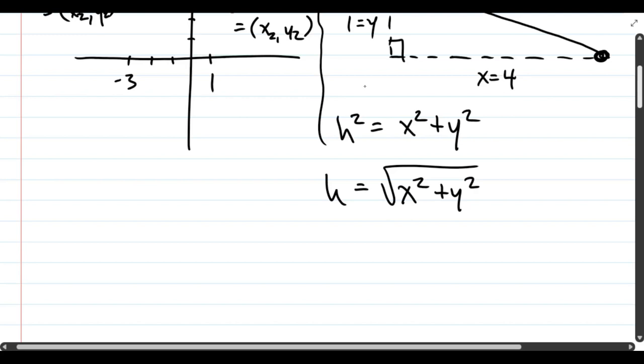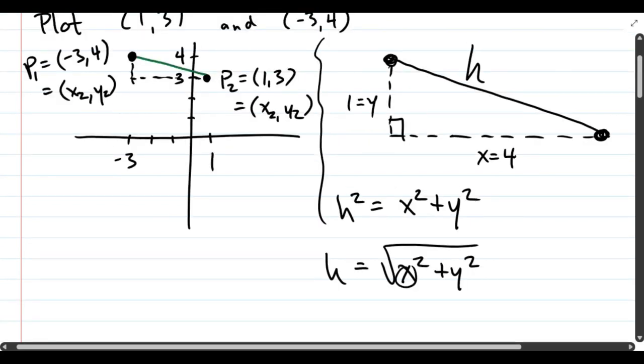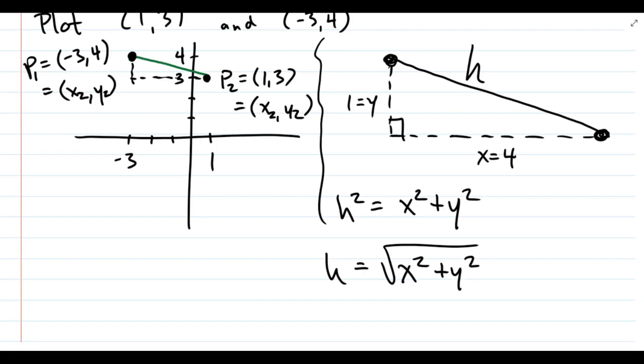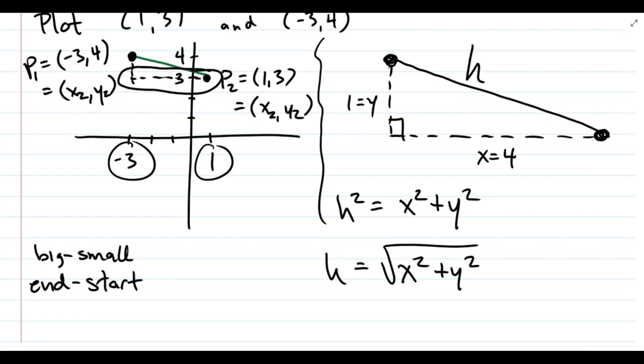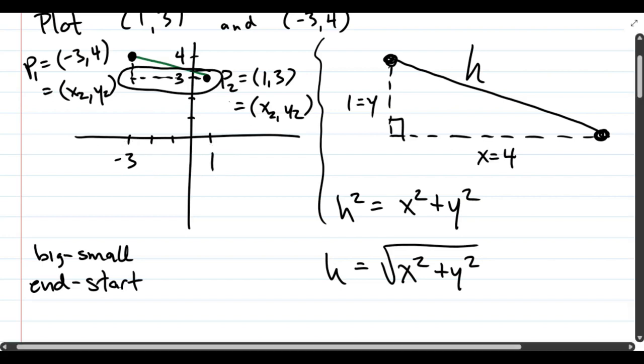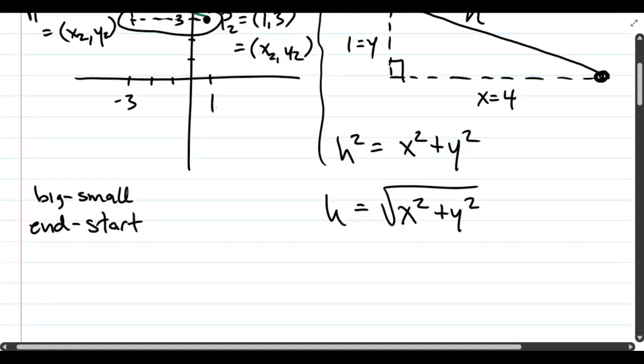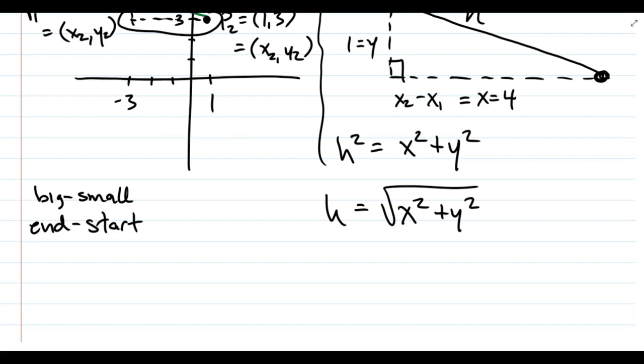So this will be the distance right here. Notice this is always going to be a positive number because we are squaring whatever the x is and whatever the y is. And that forces them to be positive. And then we take a square root of a positive number. It's always going to be positive. What I'm going to do now is use the x1, y1, x2, y2 instead of just x and y. So we'll look back here. We did the y's first, but I'll look at the x's now. So I just want to think about those two x values. And you always want to think of big minus small. Or another way is end minus start.